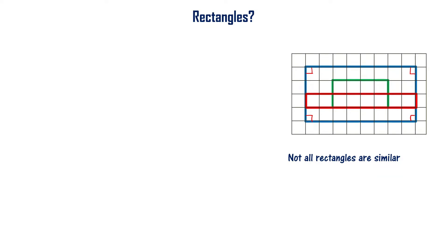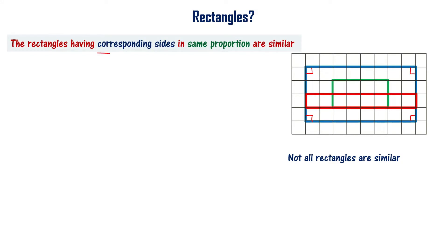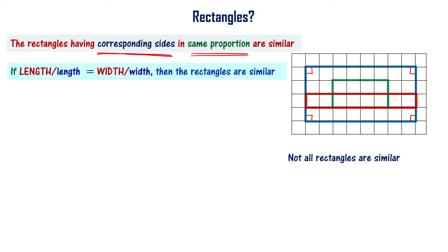Not all rectangles are similar. Only rectangles having corresponding sides in the same proportion are similar. For example, consider two rectangles: if the length of rectangle 1 divided by length of rectangle 2 is equal to the width of rectangle 1 divided by width of rectangle 2, then we can say those two rectangles are similar.